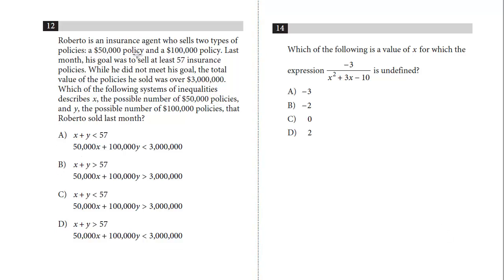Roberto is an insurance agent who sells two types of policies, a $50,000 policy and a $100,000 policy. Last month, his goal was to sell at least 57 insurance policies. While he did not meet his goal, the total value of the policies he sold was over $3 million. Which of the following systems of inequalities describes X, the possible number of $50,000 policies, and Y, the possible number of $100,000 policies that Roberto sold last month?